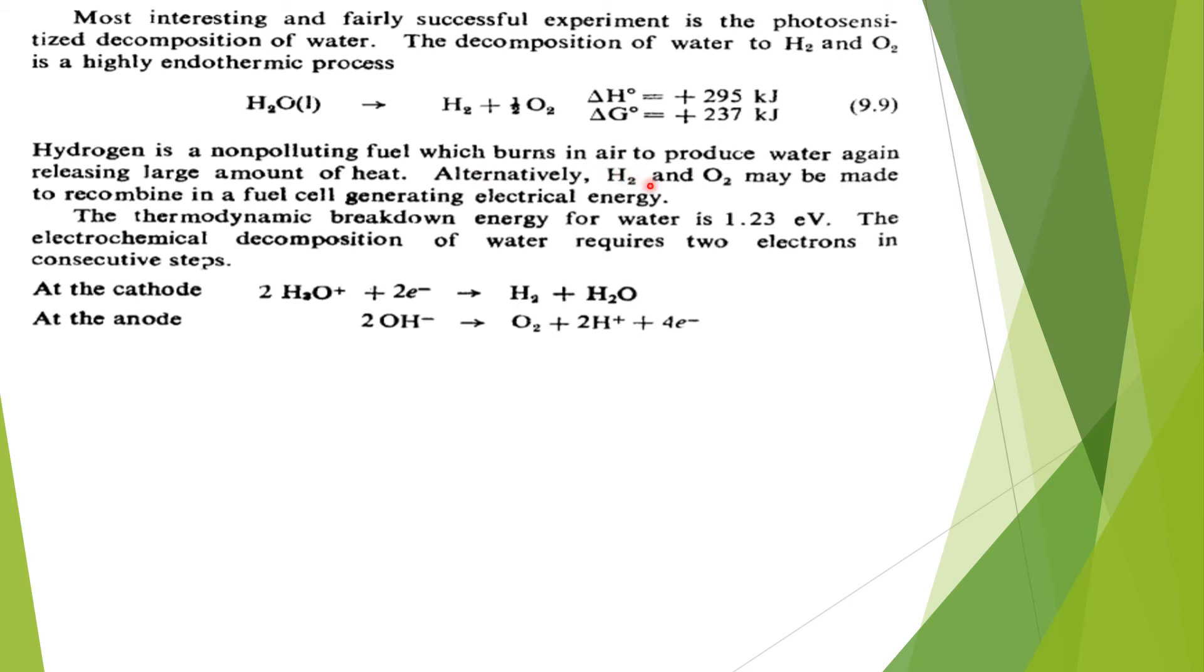Alternatively, H2 and O2 may be made to recombine in a fuel cell, generating electrical energy. Water can be burnt in air, releasing H2 and O2, and then H2 and O2 can be utilized in a fuel cell which will generate electrical energy. The thermodynamic breakdown energy for water is about 1.23 electron volts.